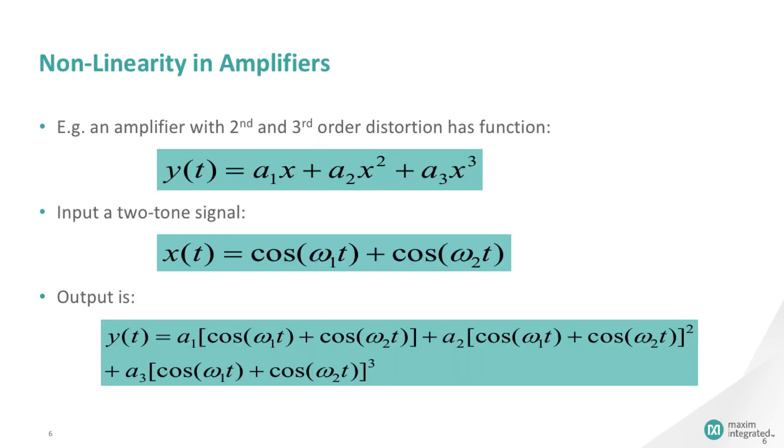But in RF, non-linearity will not cause only distortion, but will generate new, higher, and unwanted frequencies, especially when a band of frequencies are injected into the amplifier. We illustrate this phenomenon quickly with two input frequencies, omega-1 and omega-2. The non-linear x-squared and x-cubed terms will generate frequencies that are other than the original ones.